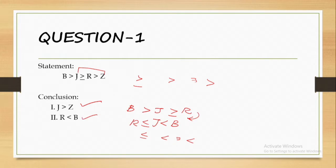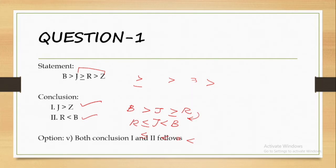B is greater than or equal to R. Going through the chain: equal to J, greater than or equal to, so R is less than B. For conclusion 2, R is less than B — this is also correct. So both conclusion 1 and conclusion 2 follow. Option 5 is the right answer. For reverse order questions, we reverse the chain.